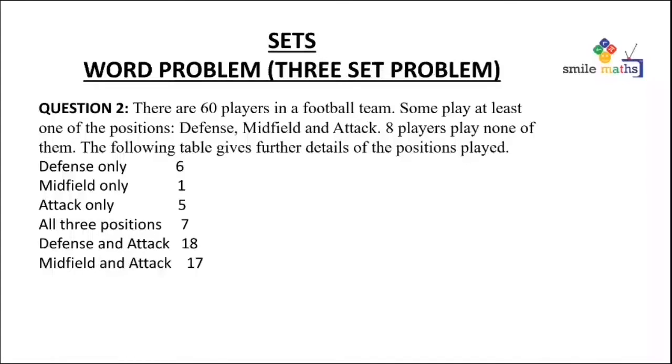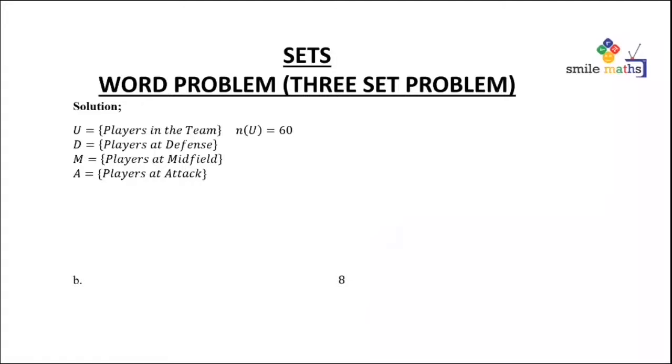So we are going to represent this on a Venn diagram, and our next task is how many play midfield. U for all the players, so the number of elements in U is 60. We have D for defense, M for midfield, and A for attack.